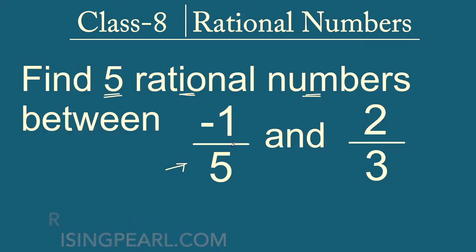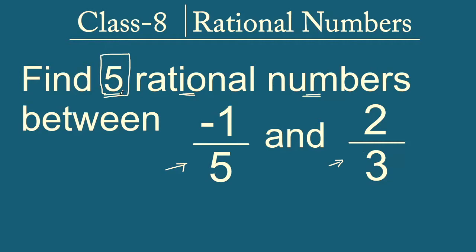So between minus 1 divided by 5 and 2 divided by 5, both of them are rational numbers, and we want to find out 5 other rational numbers between them. So how do we solve a problem like this? That is what we are going to find out in this particular video. Let's get started.